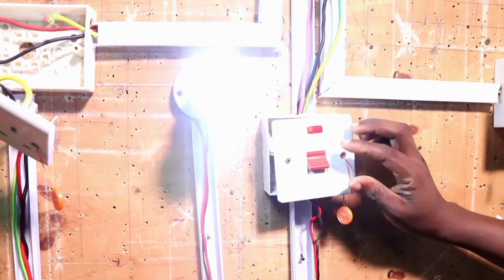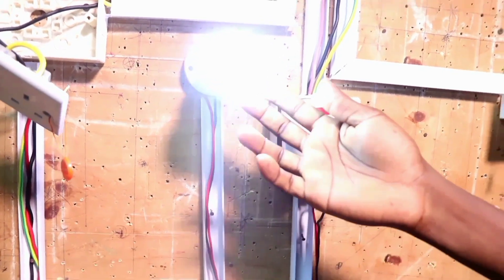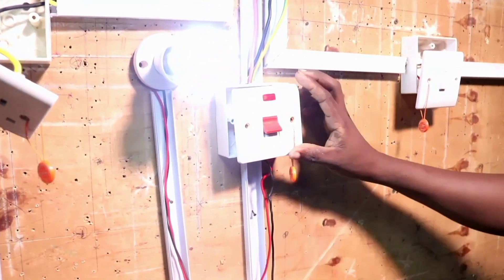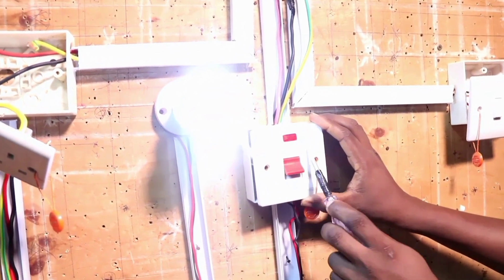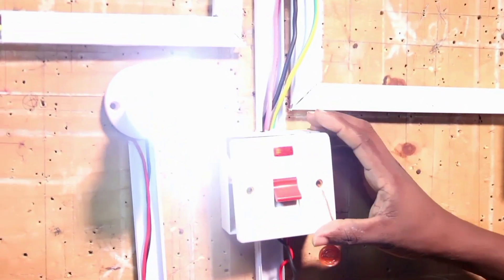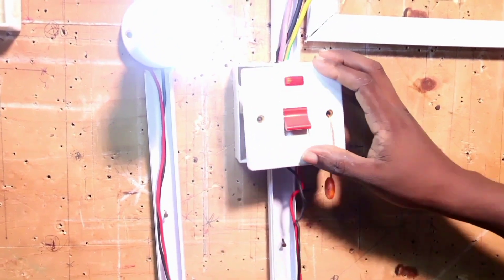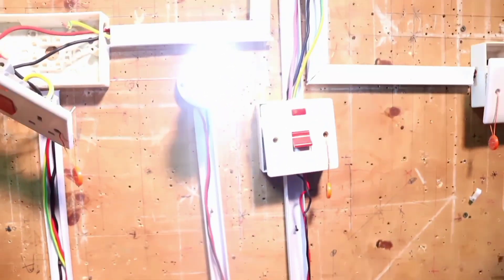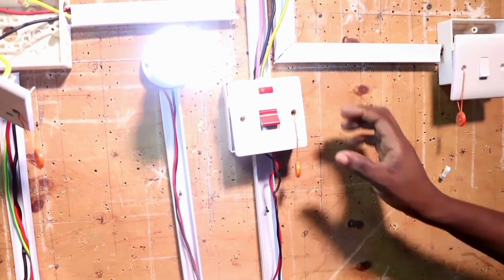If we switch on, you can see, this is our load, which has been supplied from there, our water heater switch, using the connection I have shown. So that is how we connect our DP 45 ampere water heater switch. Thank you.